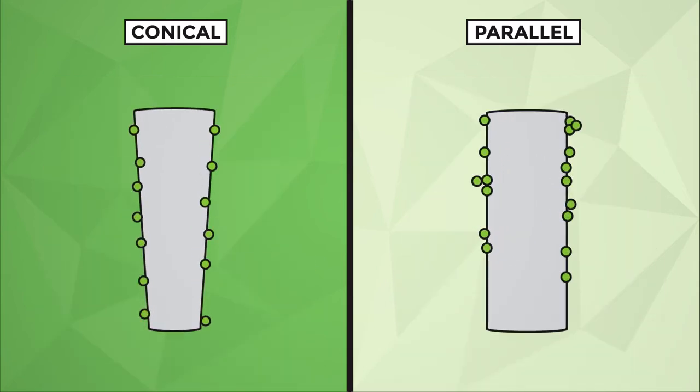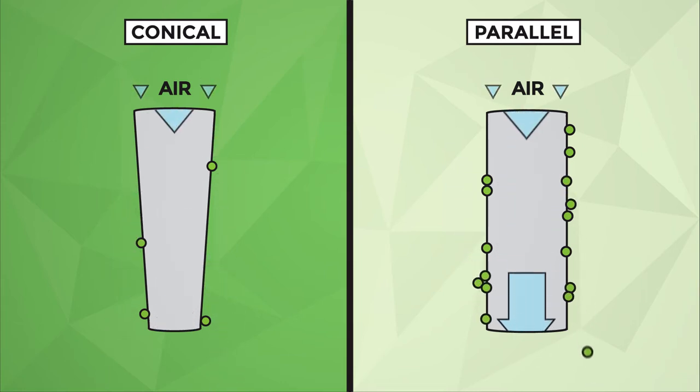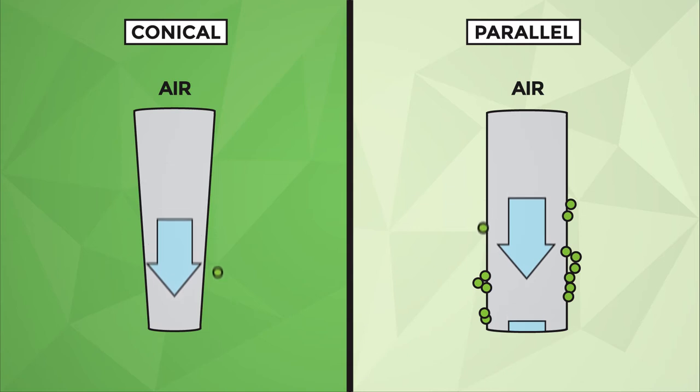During pulse cleaning, the conical shape helps to maintain the velocity of cleaning air, ensuring effective cleaning right down the cartridge.